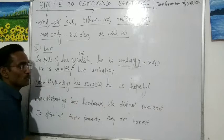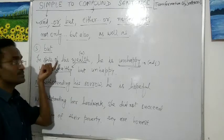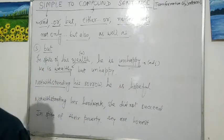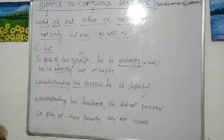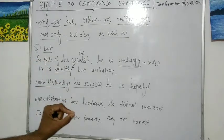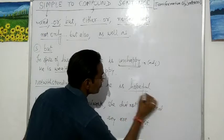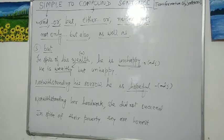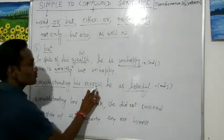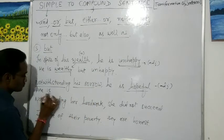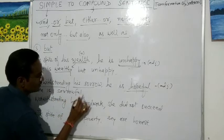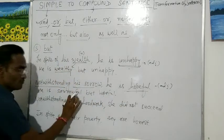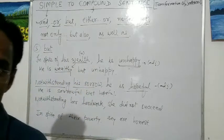Next: 'Notwithstanding his sorrow, he is hopeful.' 'Notwithstanding' means 'in spite of' or 'despite.' So this means: despite his sorrow, he is hopeful. 'Hopeful' is an adjective. We change 'sorrow' (noun) into the adjective 'sorrowful.' The compound sentence is: 'He is sorrowful but hopeful' — or: 'He is unhappy but optimistic.'